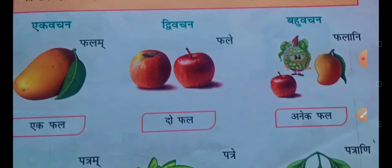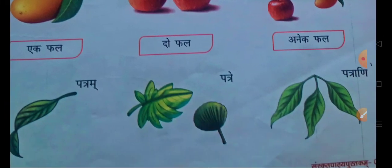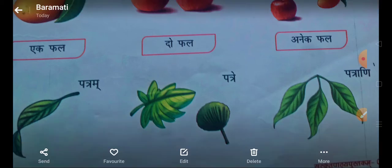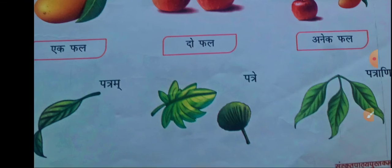The first example: if there is one phal, then phalam. If there are two phal, then phale. If there are three or more phal, then phalani. The next example is patram, patre, patrani. If there is one patta, then patram. If there are two patte, then patre. If there are three or more patte, then patrani.